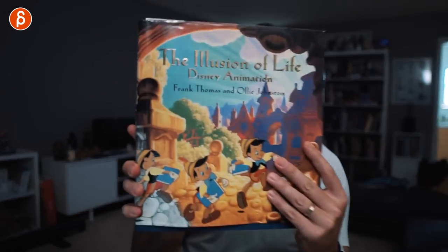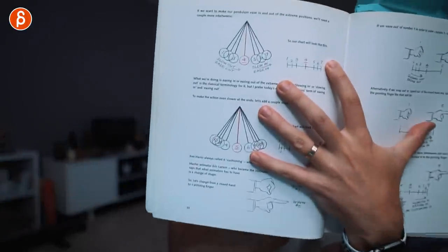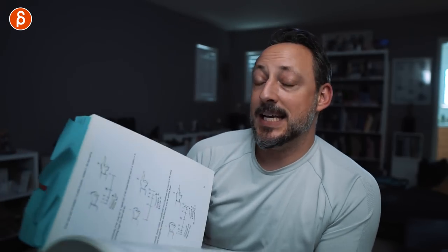If you pick up 'The Illusion of Life,' on page 47 you have the principles of animation, and on page 62 it talks about slow in and slow out. You can also look at 'The Animator's Survival Kit,' and on page 50 it starts to talk about slow in, ease in, slowing out and easing out. Lots of literature by the masters.